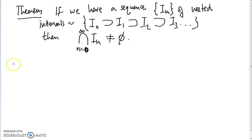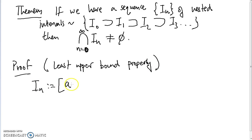Now I'll quickly present a proof of this theorem and it uses the least upper bound property of the real numbers. So let's say our interval sequence is [a_n, b_n] where n is larger or equal to 0, and n is also a natural number.